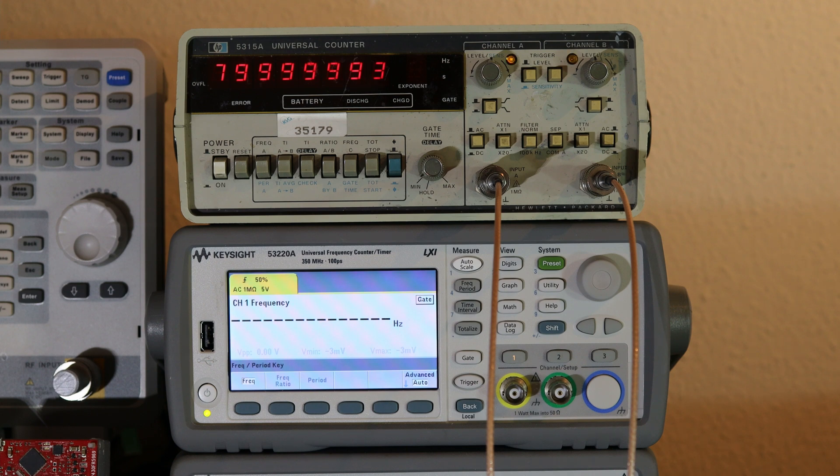These two instruments sit particularly on opposite ends of the spectrum of features and when they were first introduced. The HP 5315A at the top is a really old instrument, and 53220A is particularly new. In this video I'm going to show you how this really old, really low cost 5315A universal counter compares against 53220A, a really expensive almost top-of-the-line frequency counter available right now from Keysight.